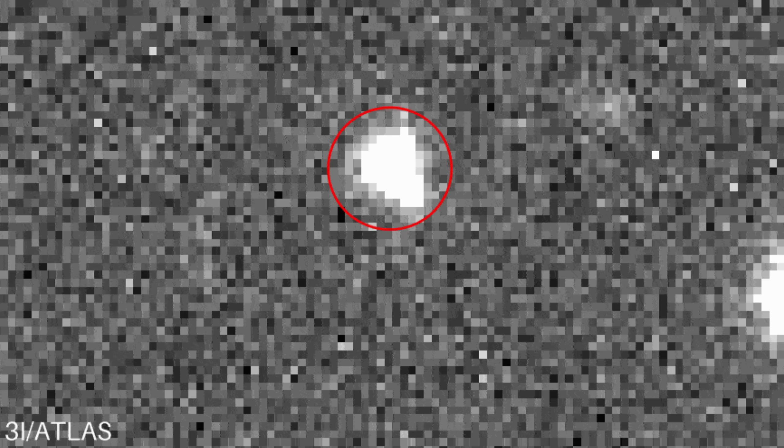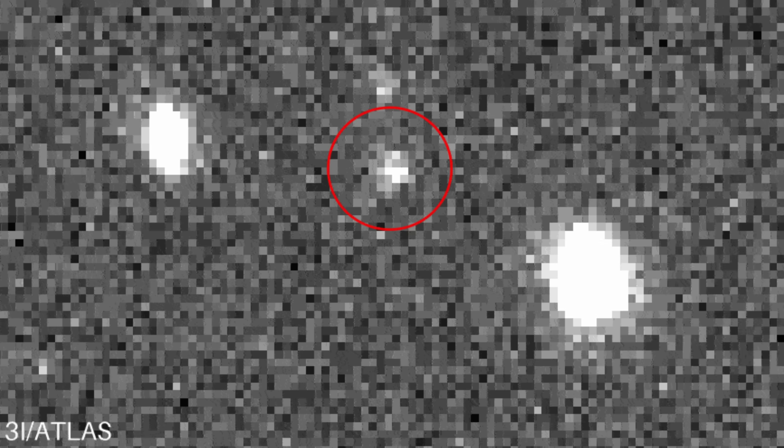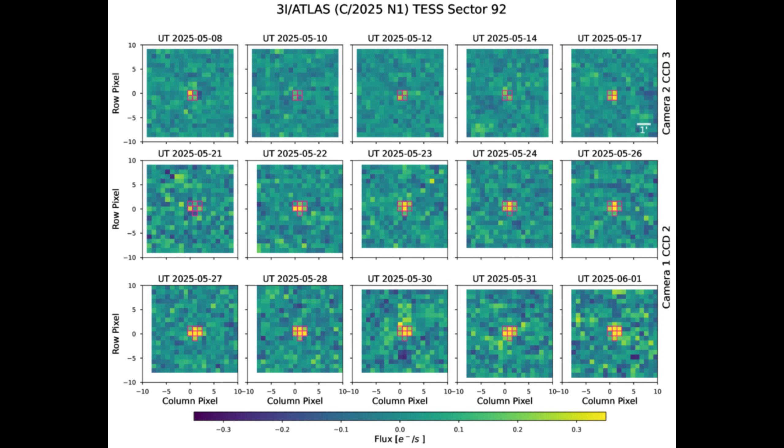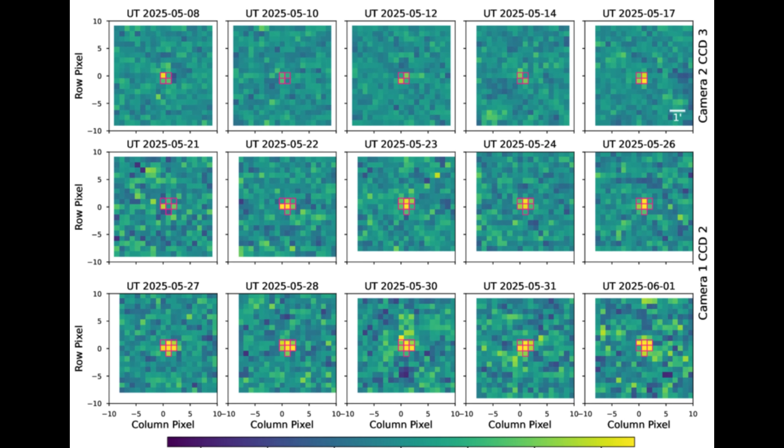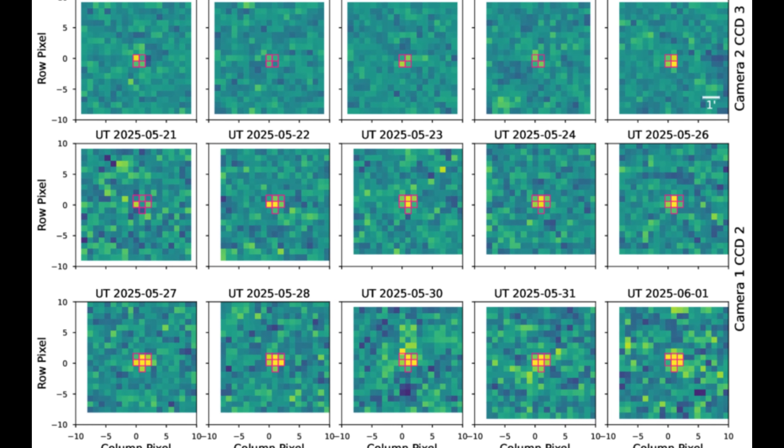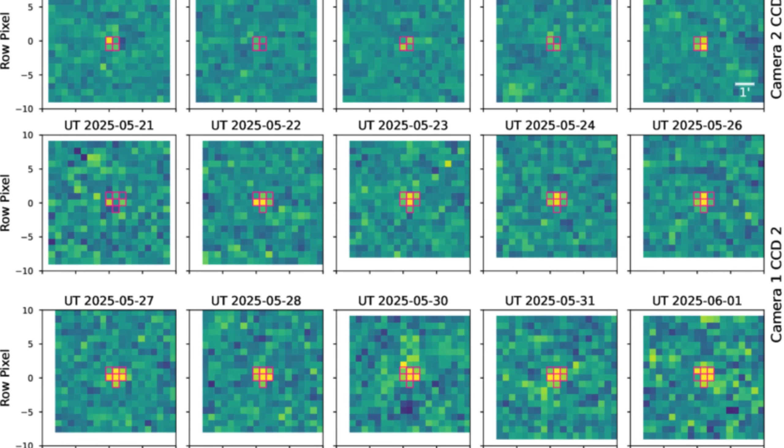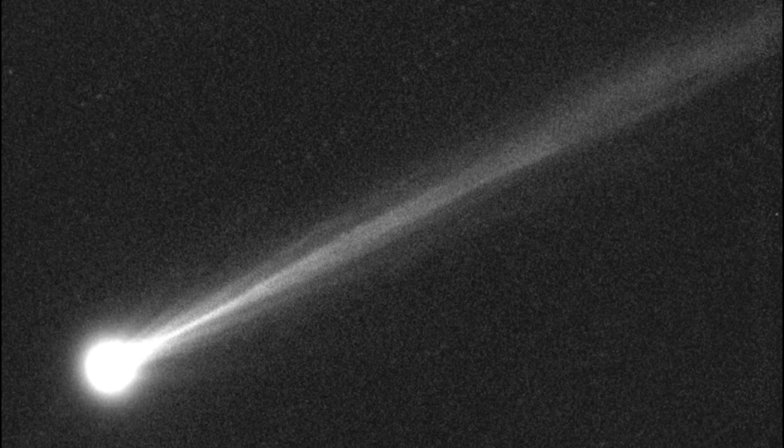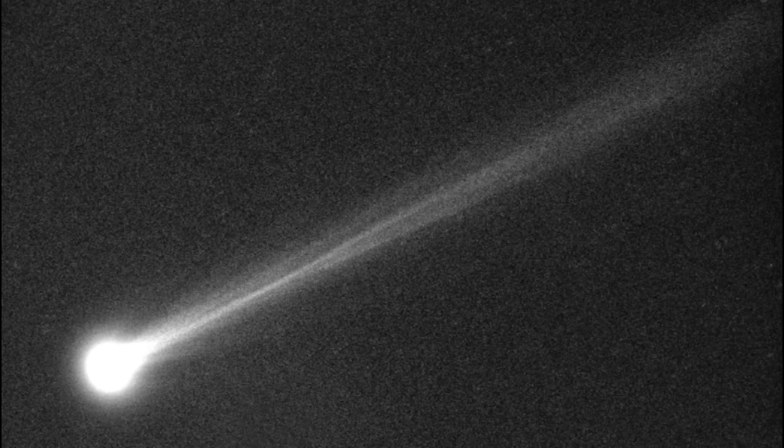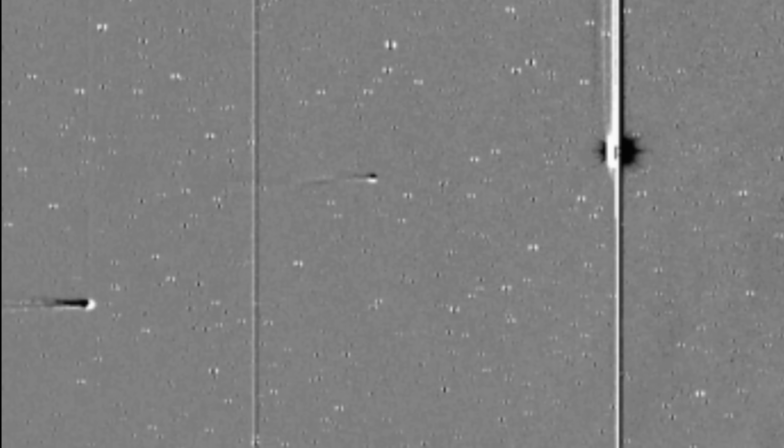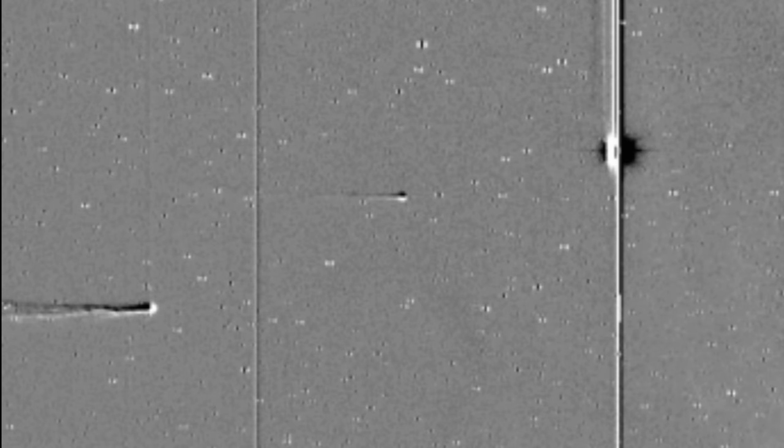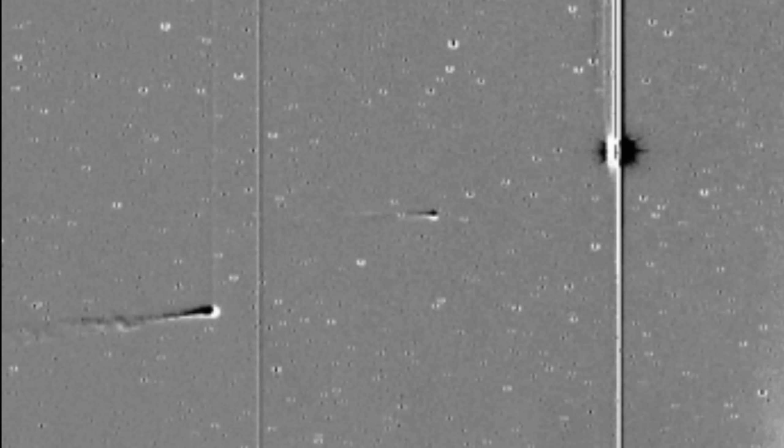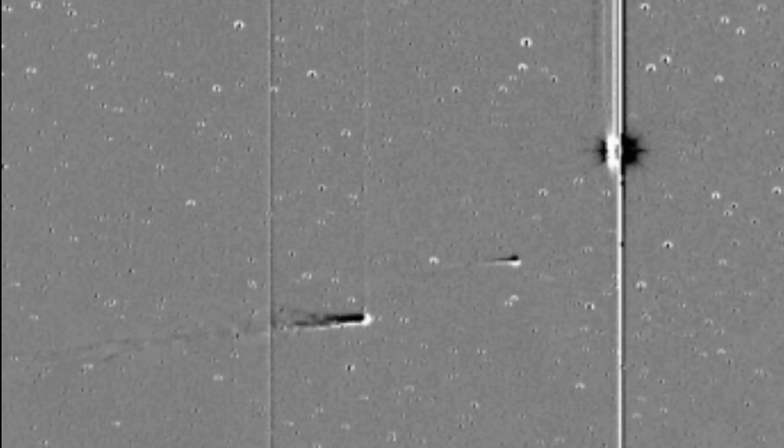A faint smudge of light moving against the backdrop of distant stars. Its designation was technical, almost boring: 3i Atlas. The 3i meant it was only the third interstellar object ever detected. But this was no ordinary visitor. As astronomers gathered more data, a startling picture began to emerge. The first thing that set 3i Atlas apart was its sheer, unbelievable size.